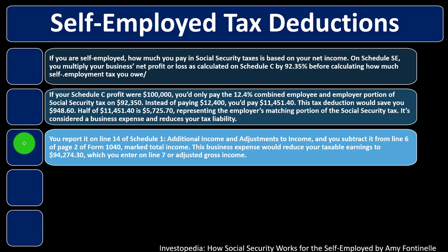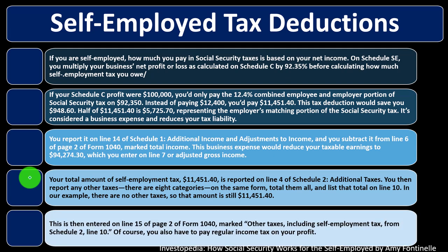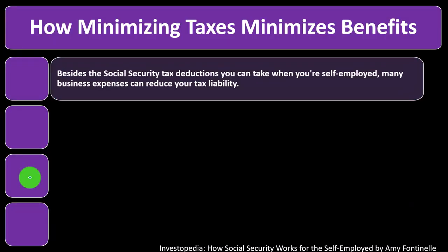You report it on line 14 of Schedule 1, Additional Income and Adjustments to Income, and subtract it from line 6 of page 2 of Form 1040, marked Total Income. This business expense would reduce your taxable earnings to $94,274.30, which you enter on line 7 as Adjusted Gross Income. Your total amount of self-employment tax, $11,451.40, is reported on line 4 of Schedule 2, Additional Tax. Total all tax categories and list that total on line 10, then enter it on line 15 of page 2 of Form 1040, marked Other Taxes including self-employment tax from Schedule 2, line 10. Of course, you also have to pay regular income taxes.